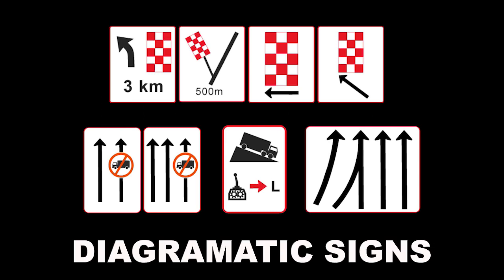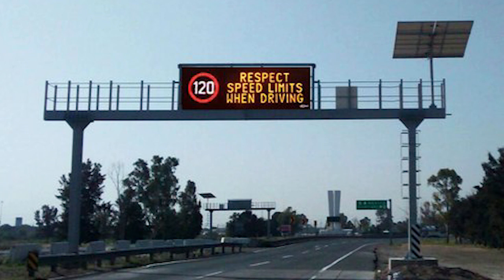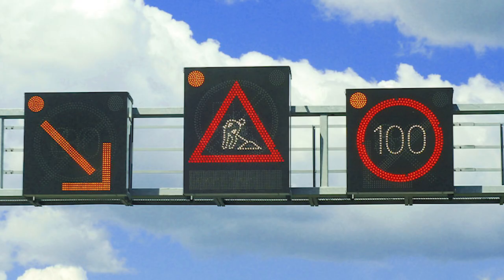Diagrammatic signs sketch an overview of how lanes or travel will change ahead, indicated by arrows or symbols. These signs are normally wide with different coloured diagrams to inform road users of what is ahead. Variable message signs are used across multiple sign categories and display different messages under different conditions without replacing road signs — they come in the form of sliding signs, roller blind signs, and digital signs.